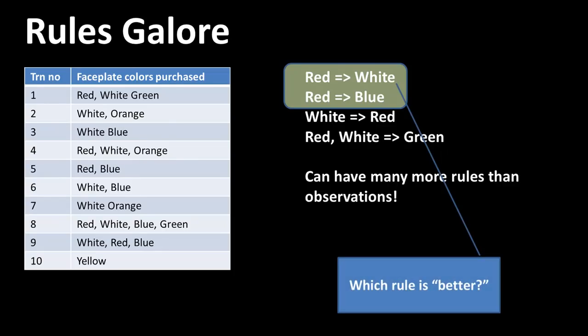So here, if you take these two rules — when red is purchased, white is also purchased; and another rule that says when red is purchased, blue is also purchased — we now want to think about which of these two rules is a better rule. What exactly do we mean by better? We want to quantify that concept. And that is what we'll be talking about in the rest of this lecture — we want to put our finger on what exactly it means for a rule to be better than another rule.